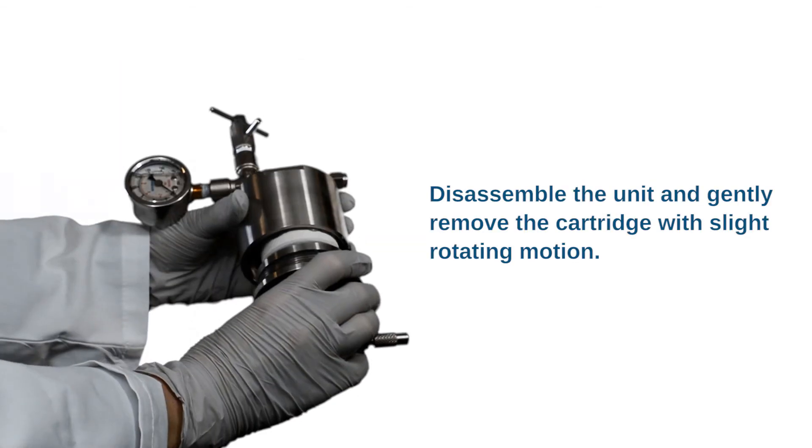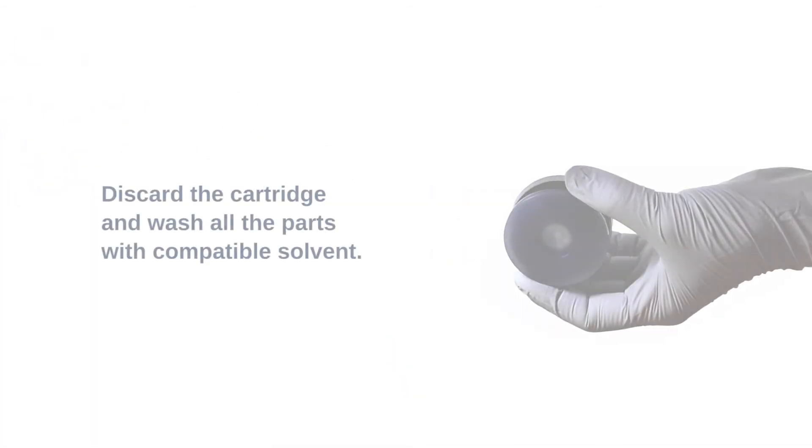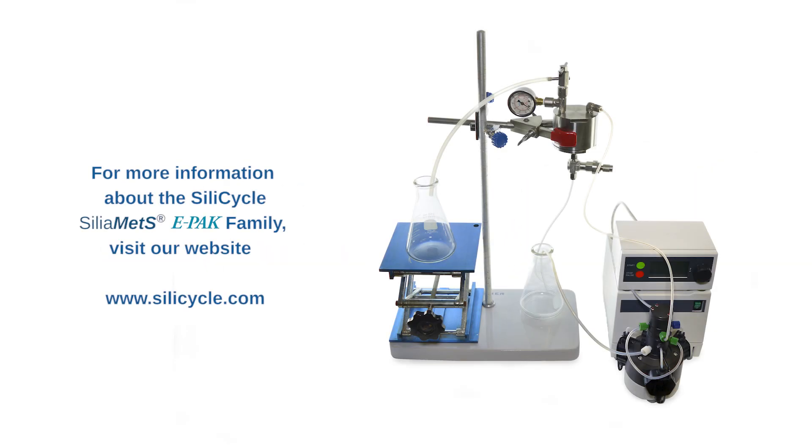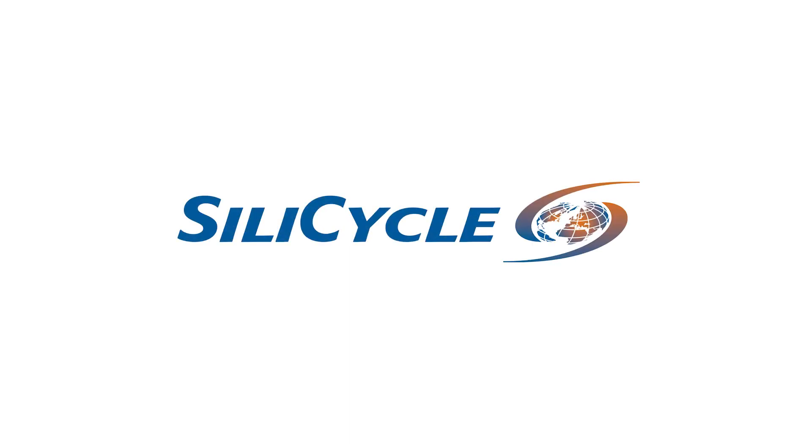Disassemble the unit and gently remove the cartridge with a slight rotating motion. Discard the cartridge and wash all the parts with compatible solvent. For more information about the SiliCycle SiliaMet E-PAK family, visit our website at silicycle.com. Thank you.